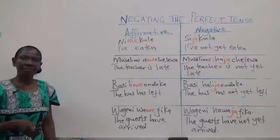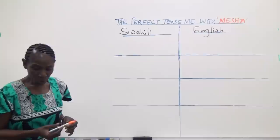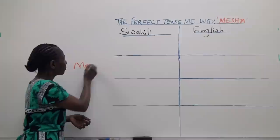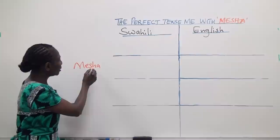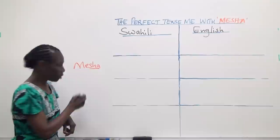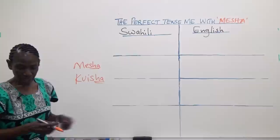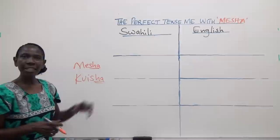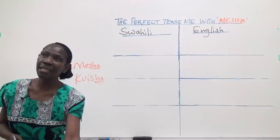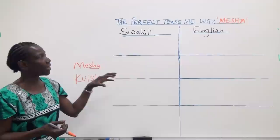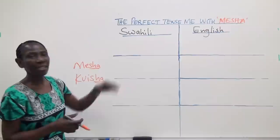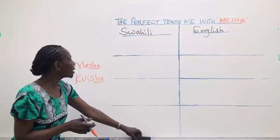We can also express the perfect tense ME with the infix MESHA. The SHA part of this infix comes from the Swahili word kuisha, which means 'to end' or 'to finish.' This infix MESHA stresses that an action has already taken place. In grammatical terms, there isn't much difference between ME and MESHA in meaning — MESHA simply puts more emphasis on an action already completed.